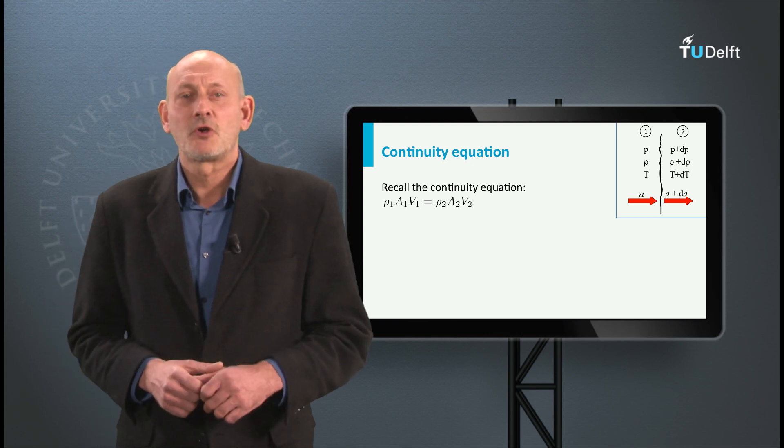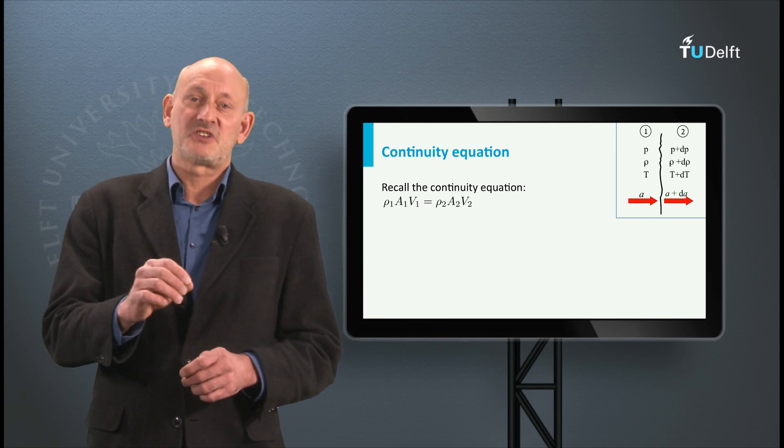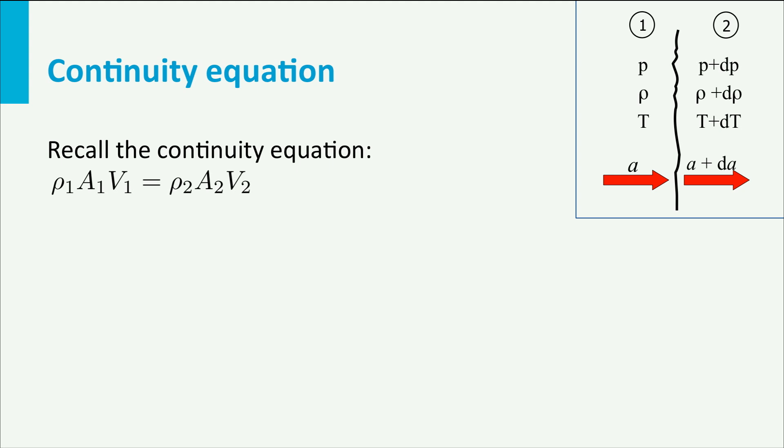If we now apply the continuity equation for compressible flow to this situation, we find rho AV is constant. With the properties shown in the picture, this transforms into rho times A1 times A is rho plus d rho times A2 times A plus dA.